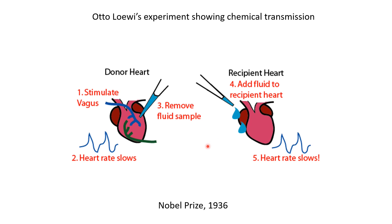This had a profound impact on our understanding of how communication happens between neurons or between neurons and muscles. For this work, Otto Loewi received the Nobel Prize in 1936 along with Henry Dale, who was able to figure out what that chemical is — he showed it was acetylcholine. There is also an interesting story associated with this experiment. It is believed that Otto Loewi was thinking about this problem for a long time, and one night he had a dream about the experiment. He woke up in the middle of the night, scribbled some notes, and went back to sleep. But the next day he found his handwriting was so bad he could not understand what he had written, and he was frustrated the whole day. The next night he had the same dream again, and this time he woke up and went and did the experiment — and the rest is history.